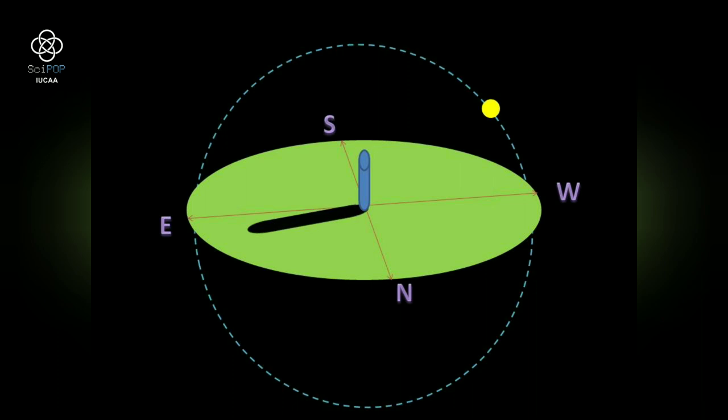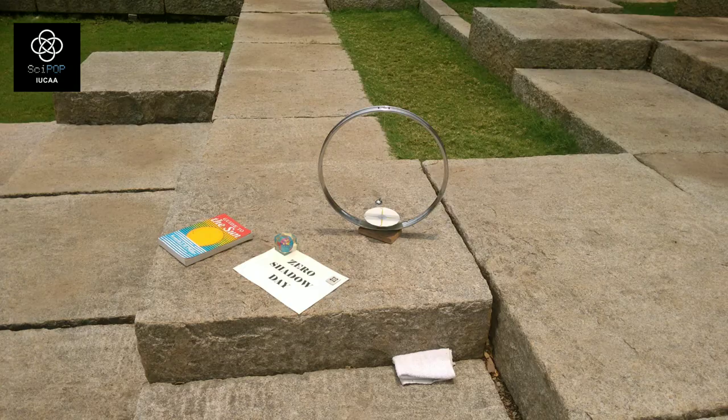There will be a day when the shadows of these objects will disappear beneath them at local noon. This day is called a zero shadow day for that place.